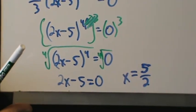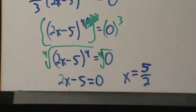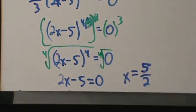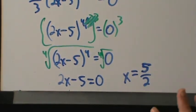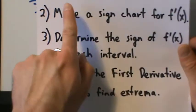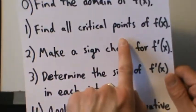So x = 5/2 is our only critical point — it's the only value that makes the derivative equal to 0, and there are no values of x that make the derivative undefined. That completes step 1: find all critical points.